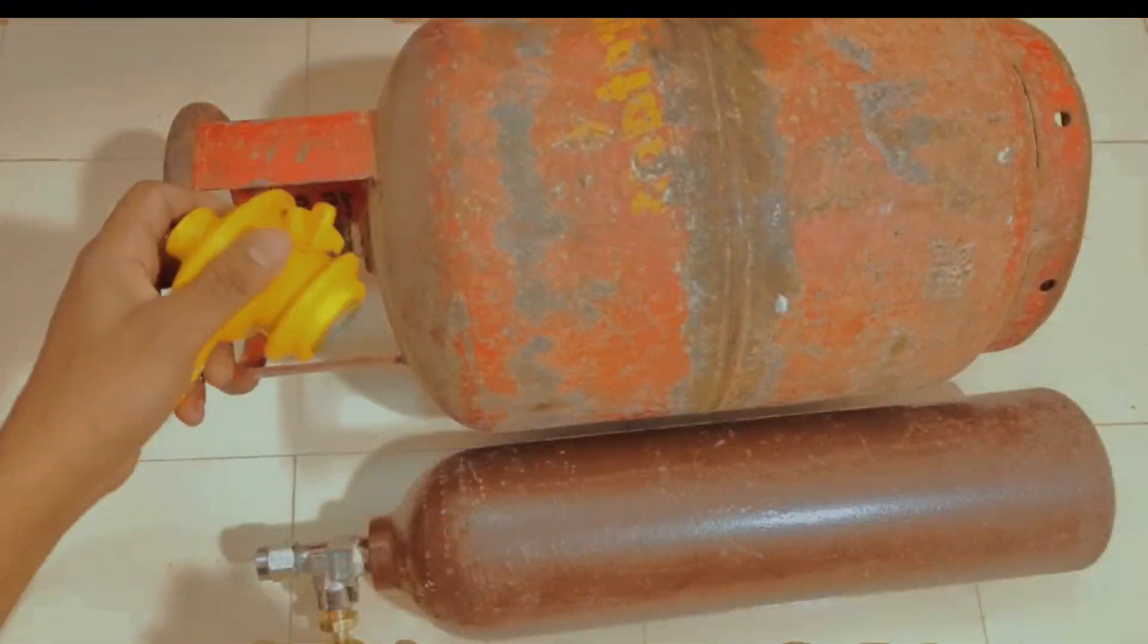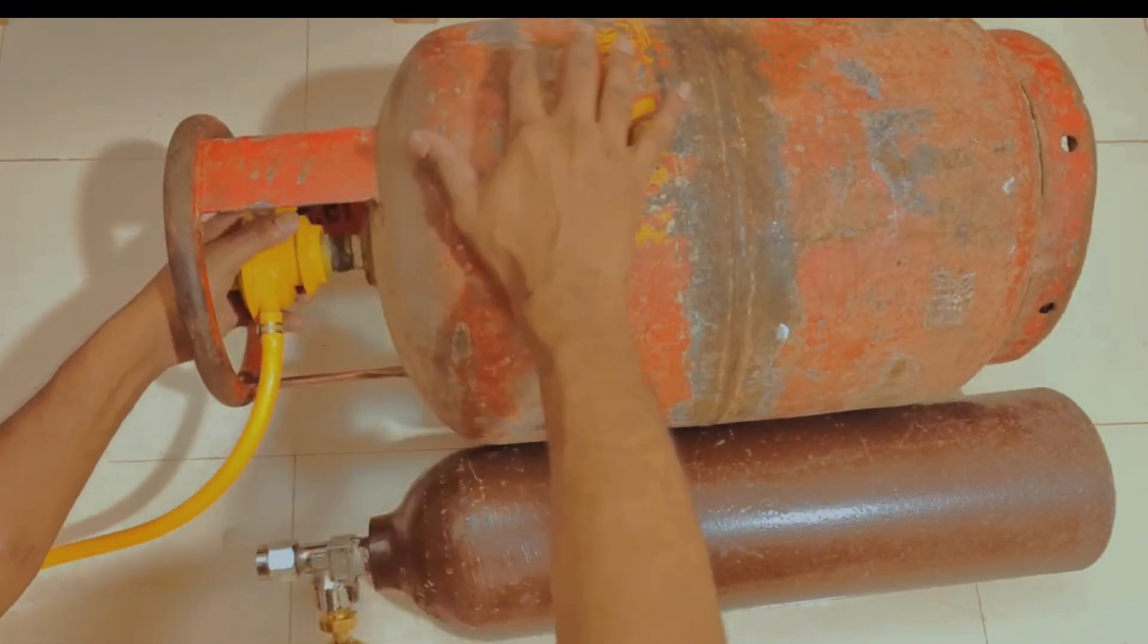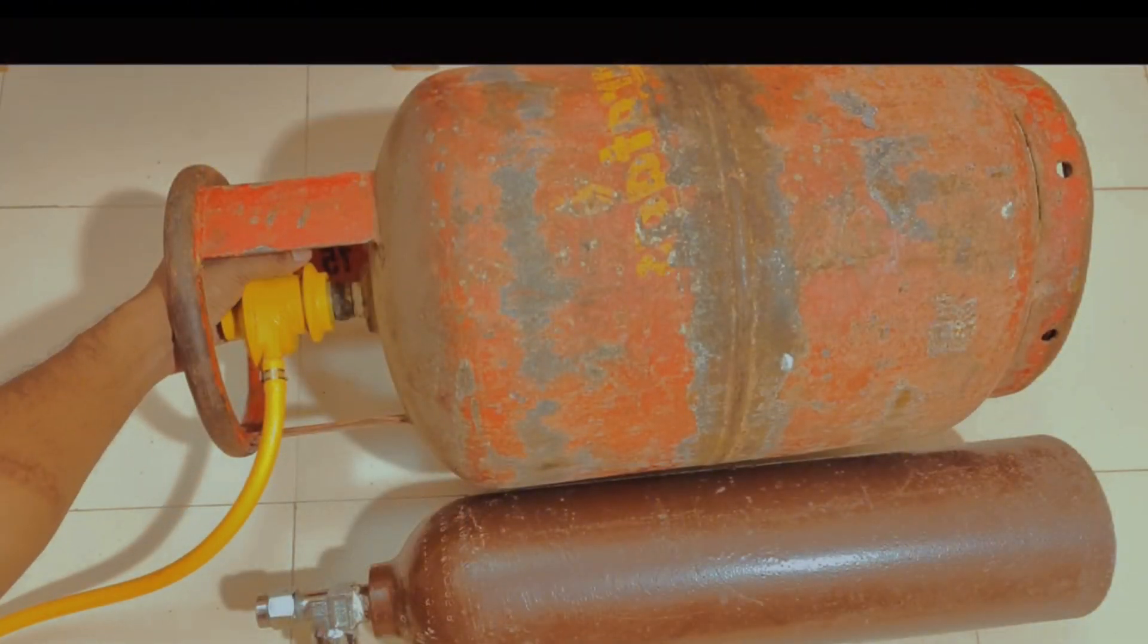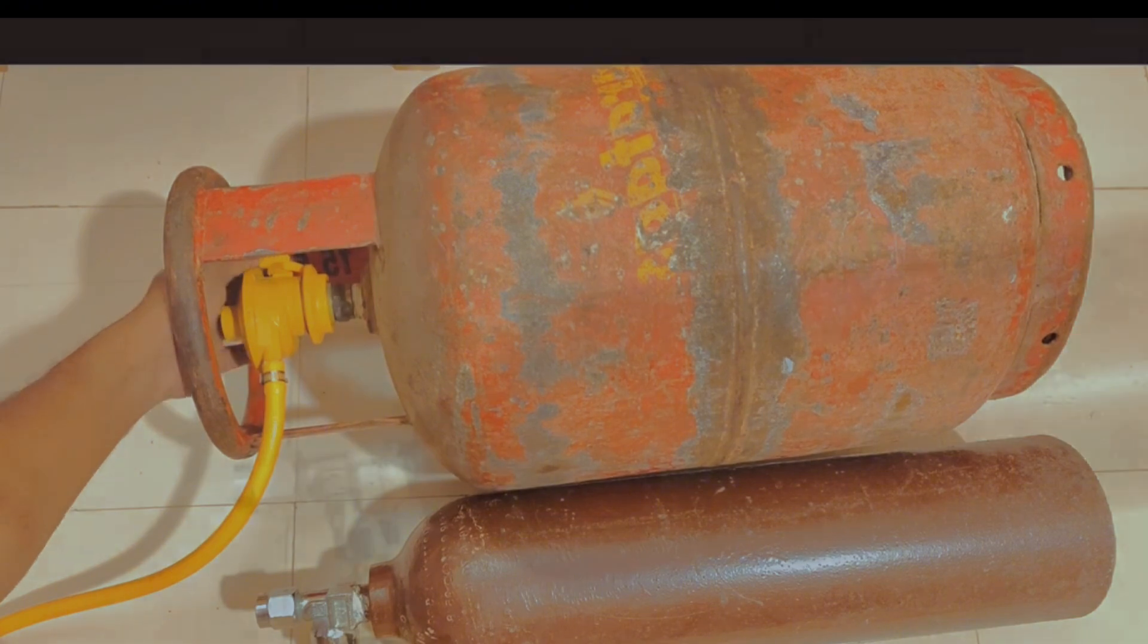To make a gas welding machine from a propane torch and a bicycle pump, you will need some additional materials, such as a hose, a valve, a pressure gauge, and a welding tip.